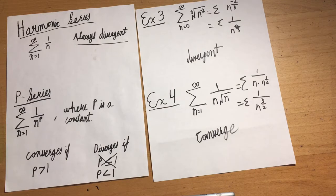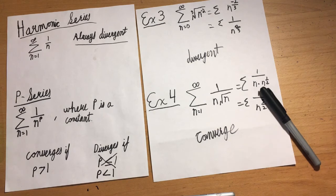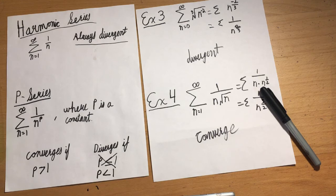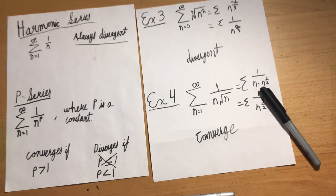That's pretty much it for harmonic and p-series. Very simple tests to go through. If you ever get one of these and you're able to identify it, it makes a question so much easier because the actual conditions for convergence and divergence are so simple. If there are any questions, drop something down in the comments and I'll answer it. Other than that, good luck, guys.